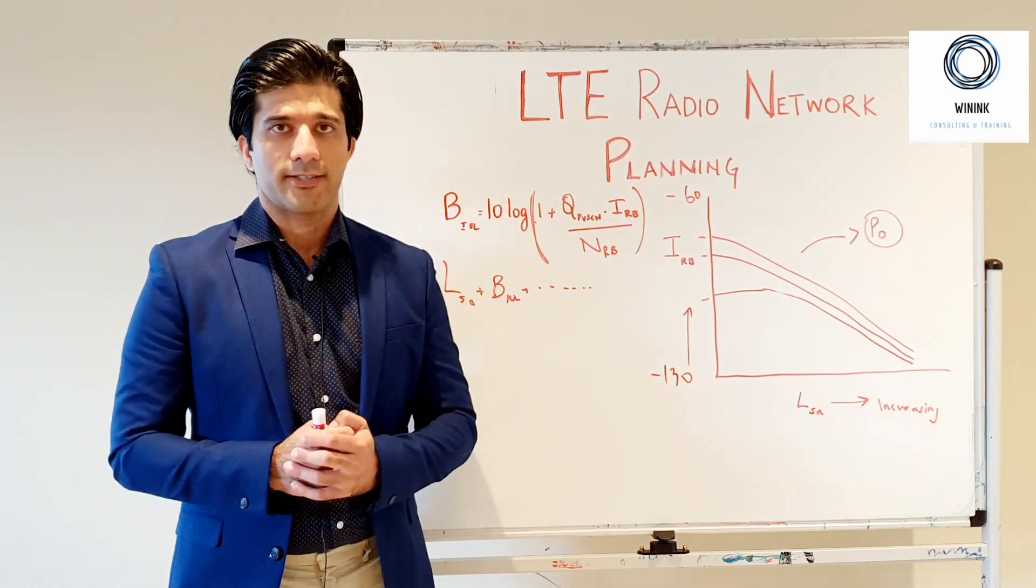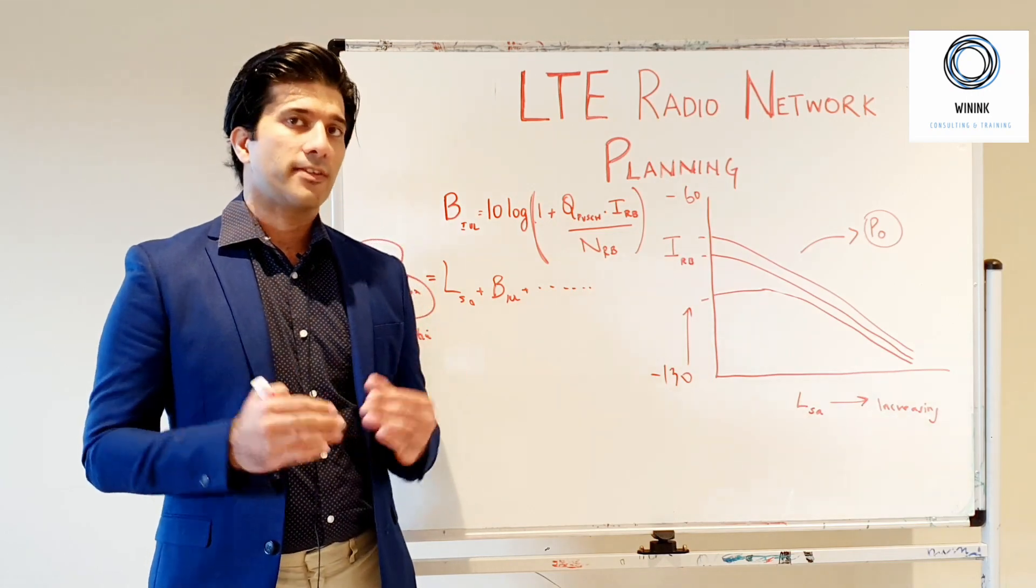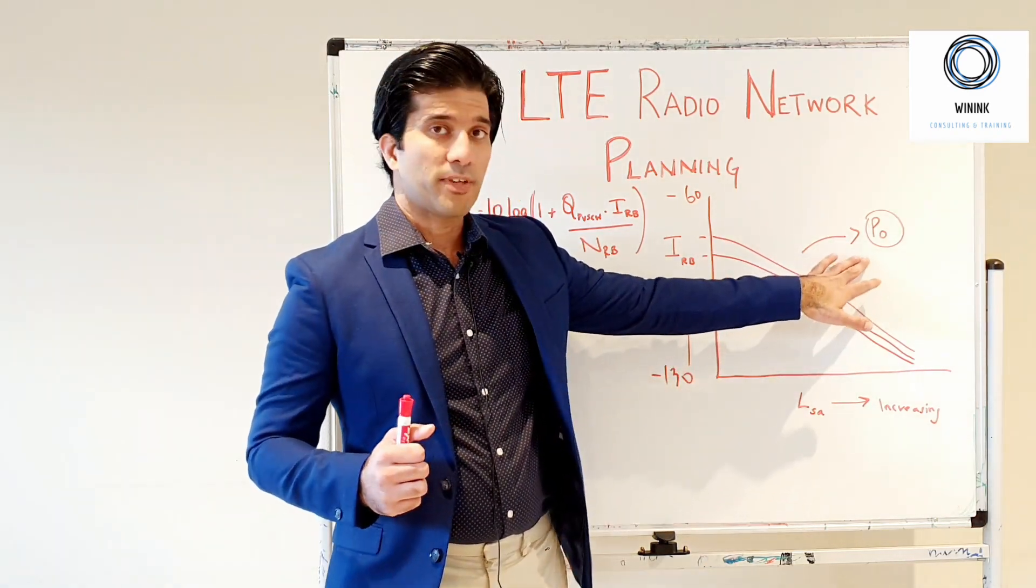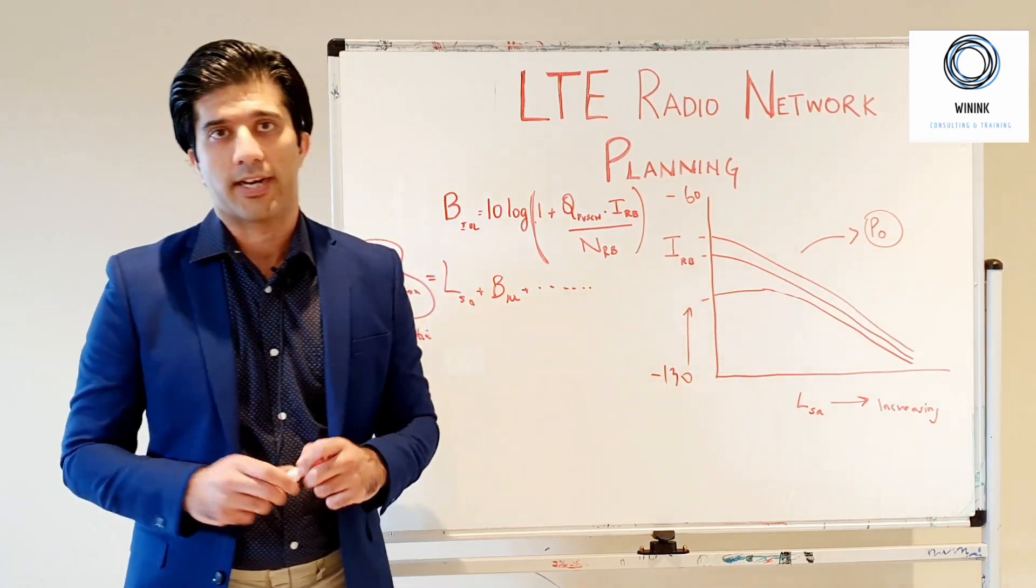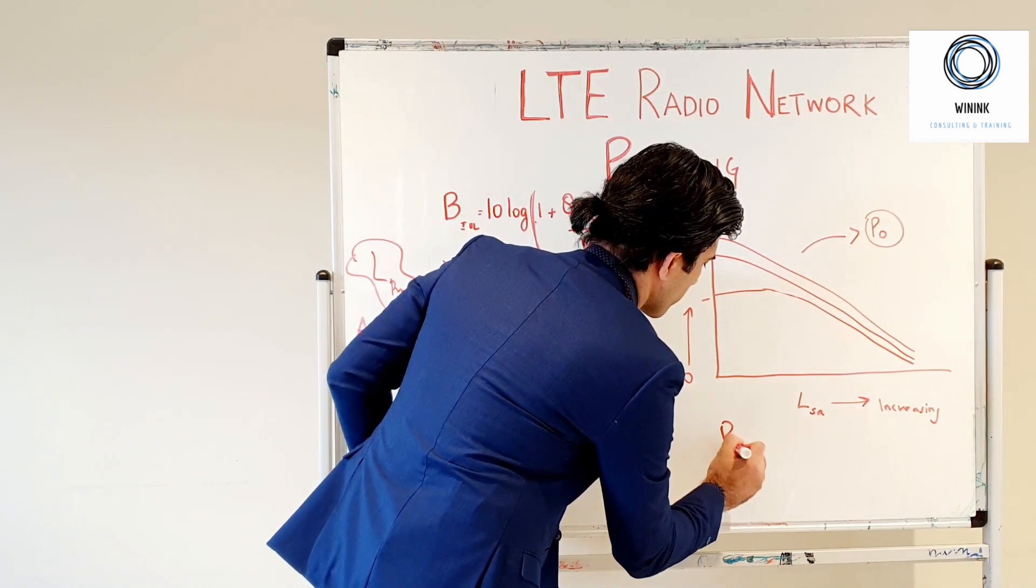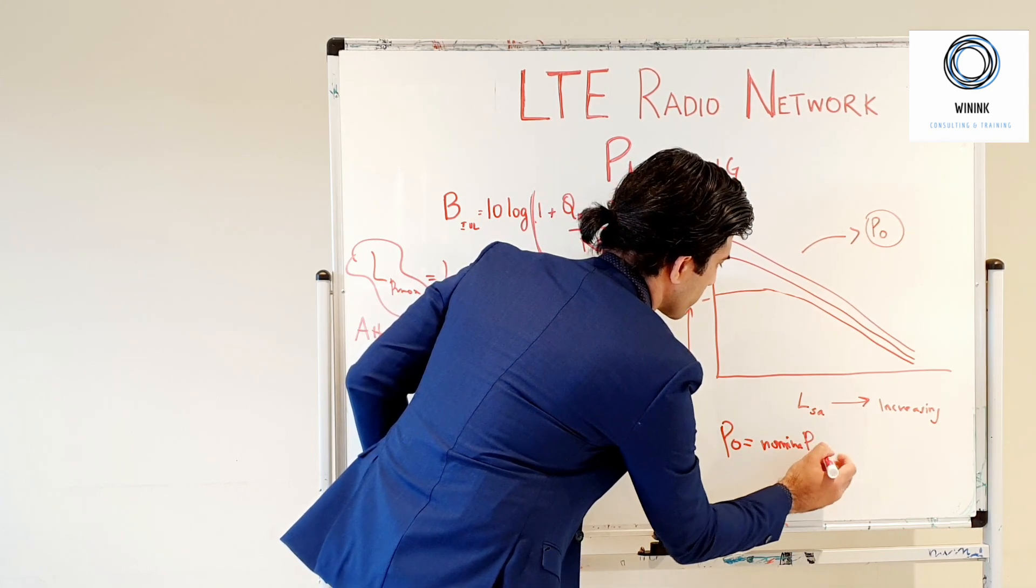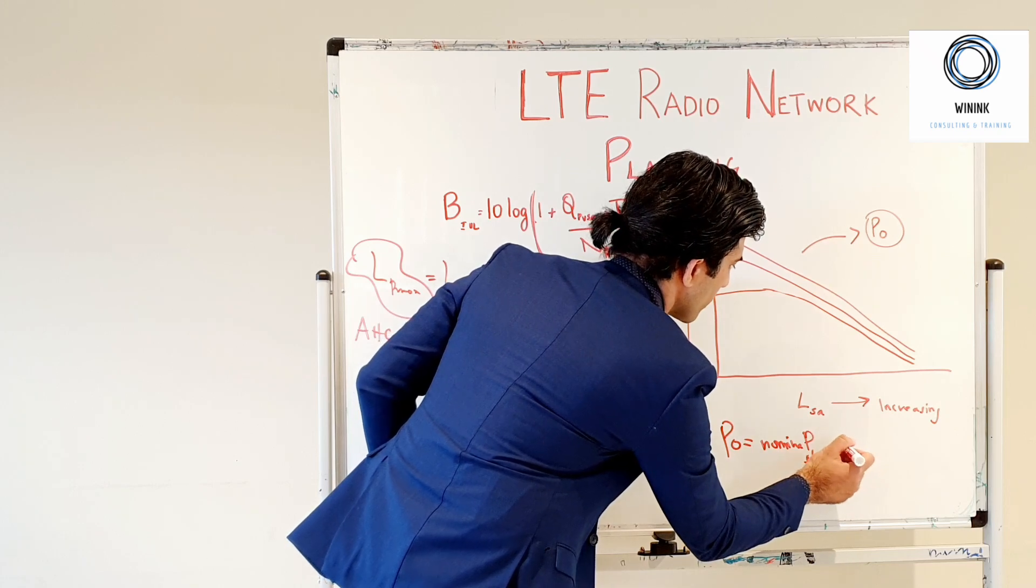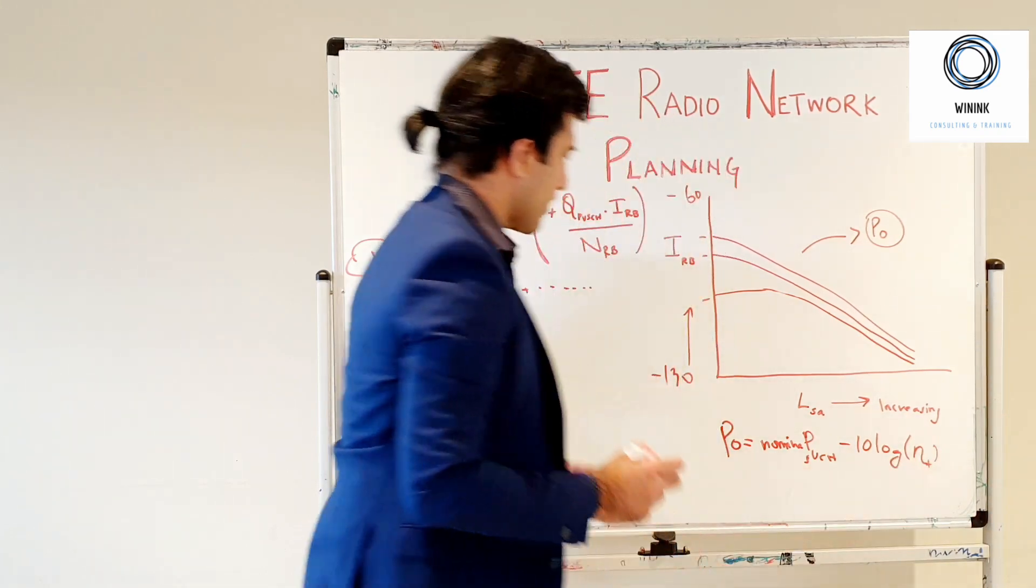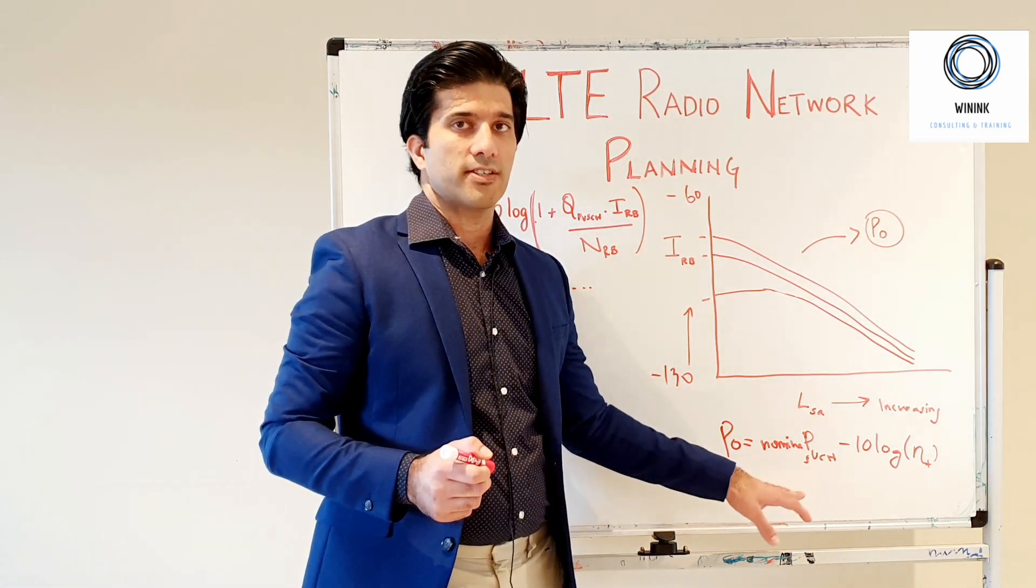Let's see how this noise rise is calculated. As we described in the previous video for designing an LTE network, we have to set some constant values. For example, P_naught - P_naught is your uplink power control target. The equation for uplink power control target P_naught is given by P_naught equals your nominal P_PUSCH minus 10 log.